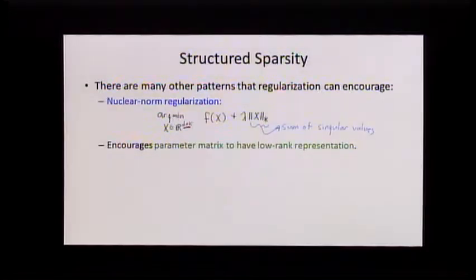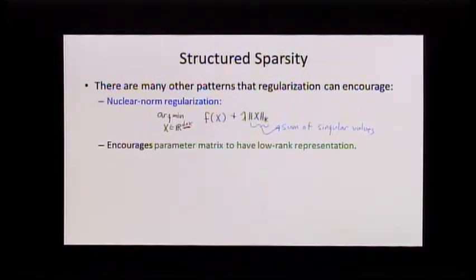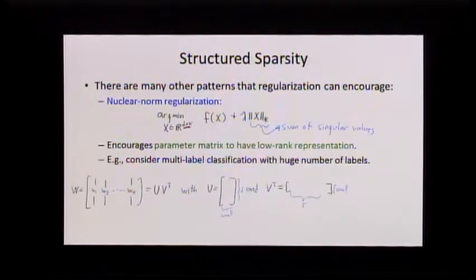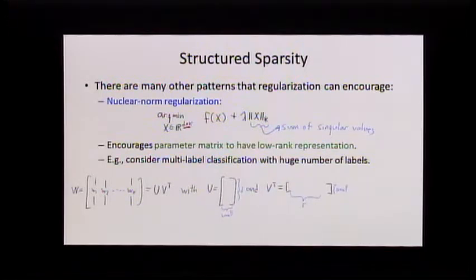The second structured sparsity method is nuclear norm or trace norm regularization, where if we're optimizing a matrix x, we put a penalty on the sum of the singular values. This encourages the matrix to have a low-rank representation — it's like putting an L1 norm on the singular values, encouraging many of them to be zero. For multiclass problems, you're approximating your matrix W by a low-rank factorization UV-transpose, where U is tall and skinny and V-transpose is wide and short.